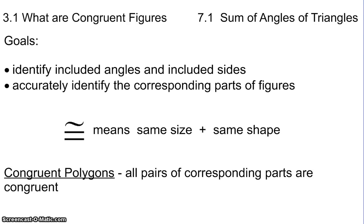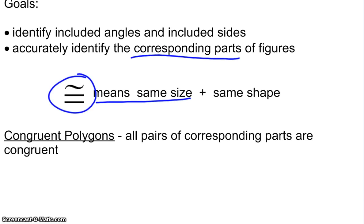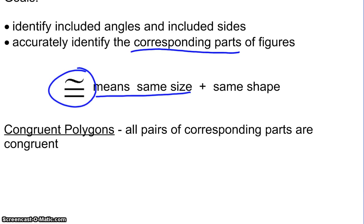We'll be accurately identifying corresponding parts of figures. In order for figures to be congruent, it means that all of the size and shape — all corresponding parts — are congruent in order for the polygons to be congruent. A lot of what we're going to talk about in this chapter is specifically triangles, and all pairs of corresponding parts must be congruent.